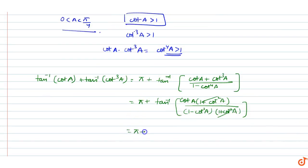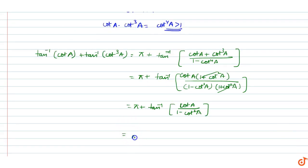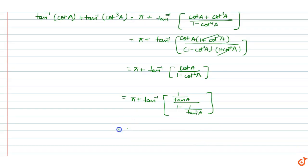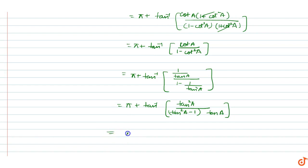After cancellation we get pi plus tan inverse of cot a upon (1 - cot square a). We can write cot a as 1/tan a, so this becomes pi plus tan inverse of (1/tan a) upon (1 - 1/tan square a), which simplifies to pi plus tan inverse of tan a/(tan square a - 1).